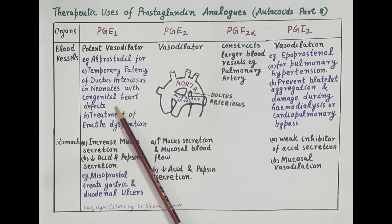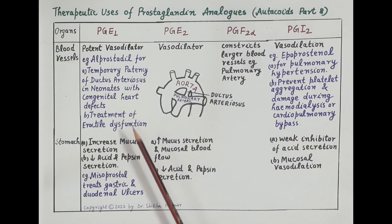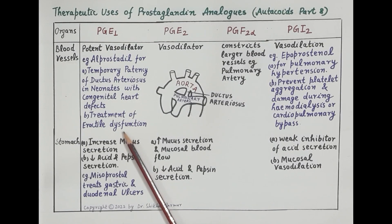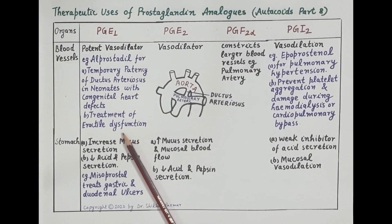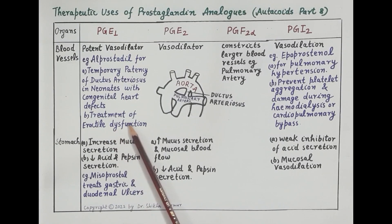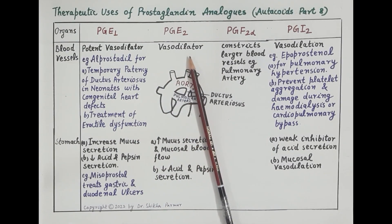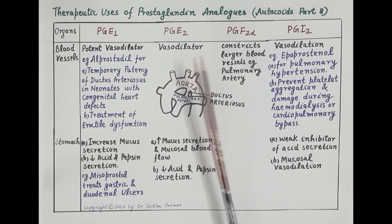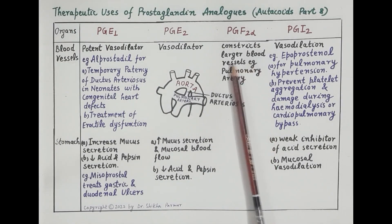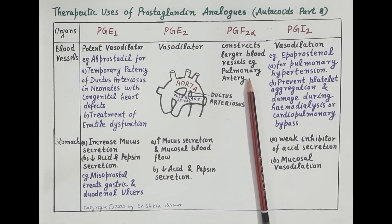As alprostadil is a potent vasodilator, it increases blood flow to the penis, causing erection, and can be used to treat erectile dysfunction in men — however, sildenafil is preferred. Prostaglandin E2 is also a vasodilator, while prostaglandin F2 alpha constricts larger blood vessels, such as the pulmonary artery.